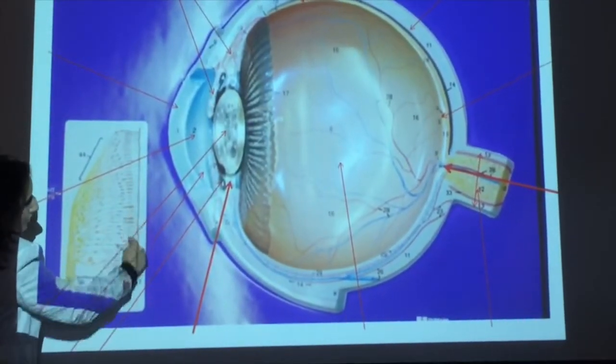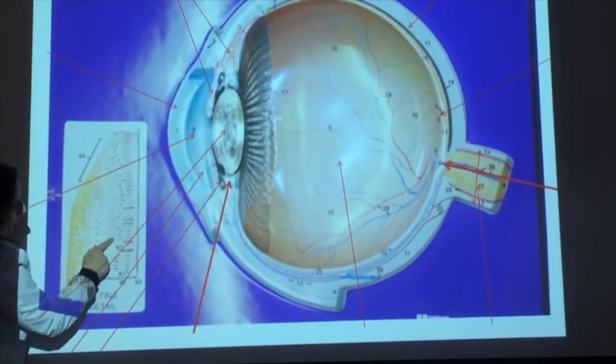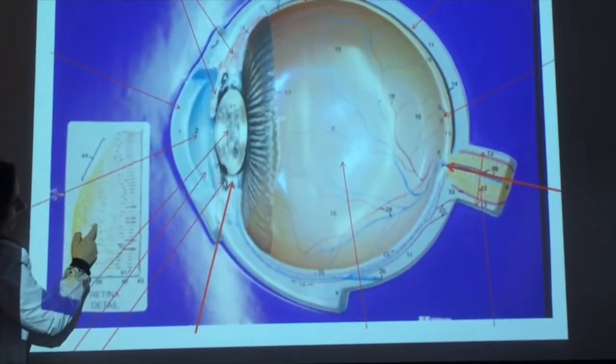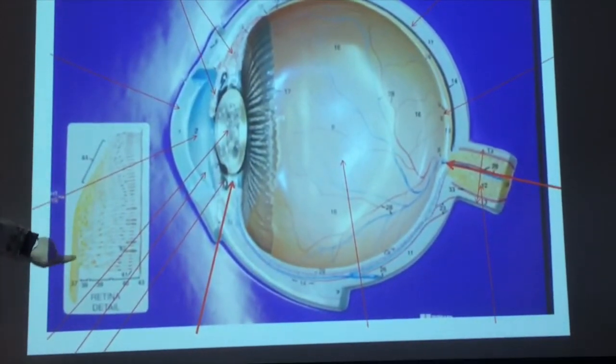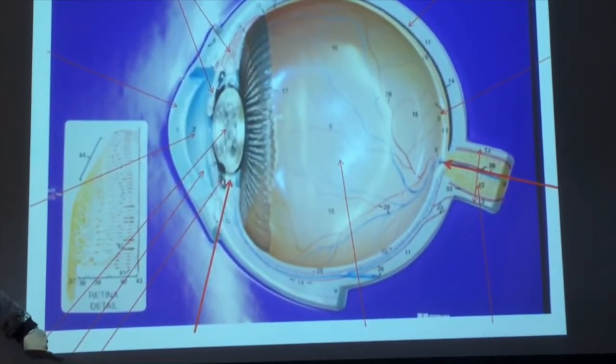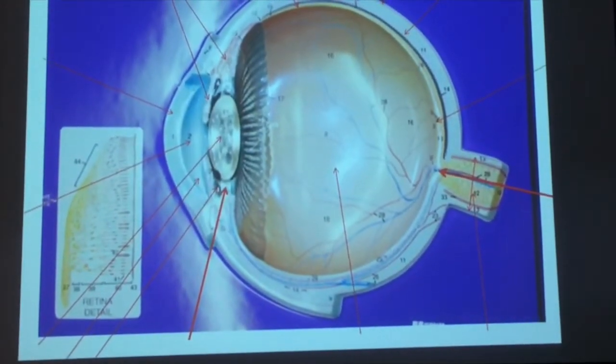So these are the photoreceptors, rods and cones. Then it goes to the bipolar, P, B, and G, and then ganglion cells, and now you can see the yellow nerves going, and that would go down into the optic nerve.